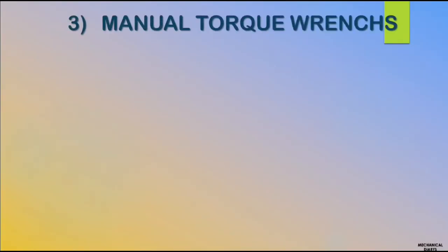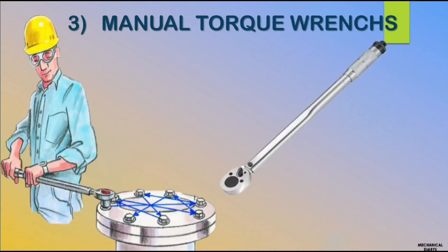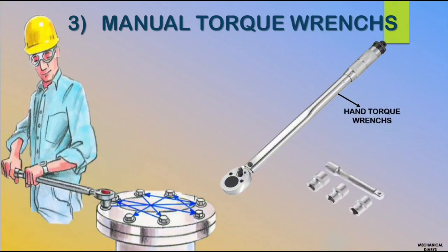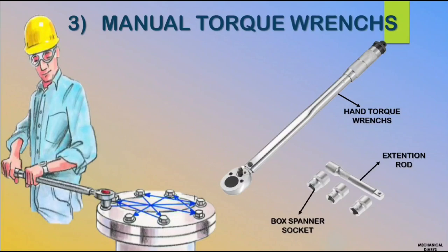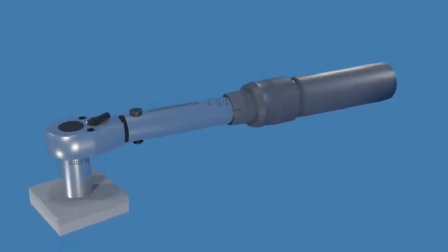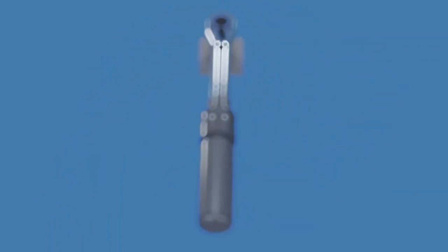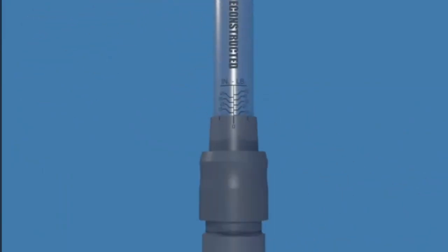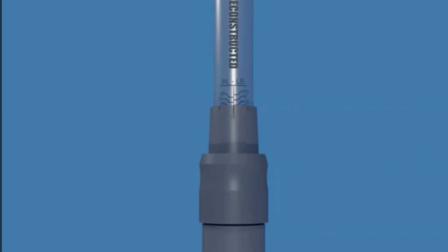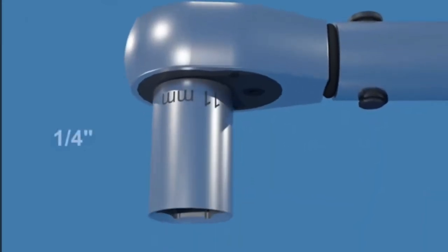Third is manual torque wrench, mostly used in low torque value flanges. Every flange and exchanger part bolt must have a specified torque value — if you tighten too much, the flange gasket may get damaged. By manual torque wrench you can tighten and loosen the bolt to the correct torque value. There is a screw adjustment in the middle of the wrench to set the torque value, and you must choose the correct socket size, otherwise the socket will damage the bolt.